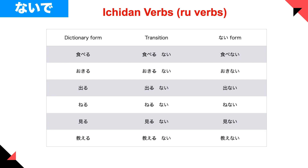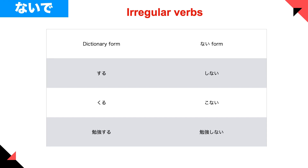For 一段 verbs, you just remove the last character and then add nai at the end. Lastly, irregular verbs — you just need to remember these: する becomes しない, くる becomes konai, and blah blah する becomes blah blah しない — so 勉強する becomes 勉強しない.